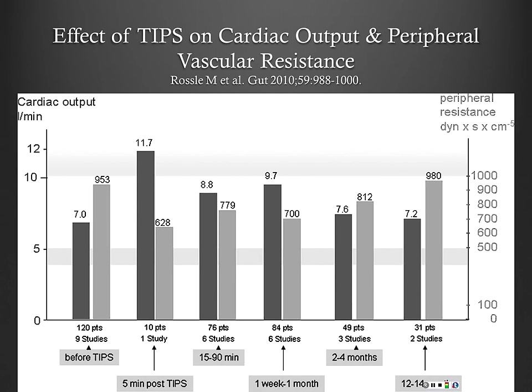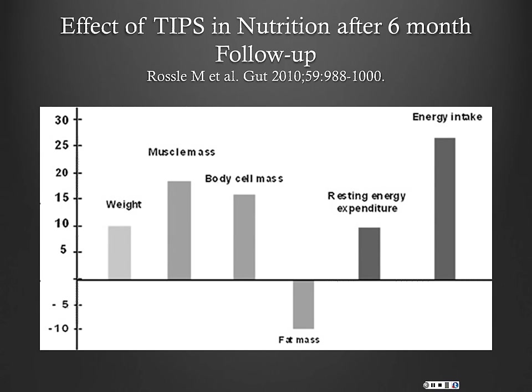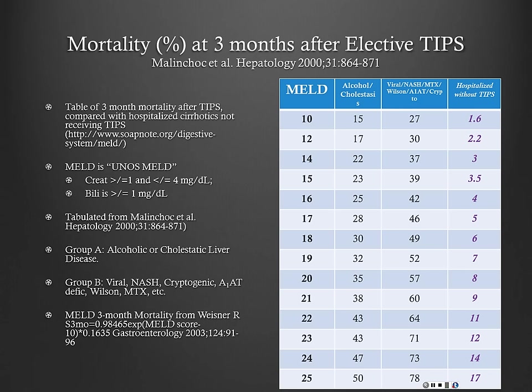As you would expect, unless the patient has significant heart failure, cardiac output goes up to compensate for that increased volume. Most nutritional parameters also improve with TIPS: weight gets better, muscle mass improves, energy intake and resting energy expenditure go up, and fat mass goes down — which is exactly what you want to see in patients with cirrhosis.